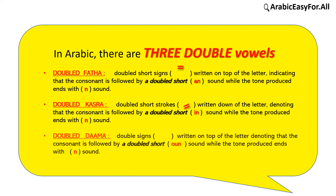Doubled ضمة are doubled signs written on top of the letter, denoting that the consonant is followed by a doubled short N sound, while the term produced ends with an N sound.